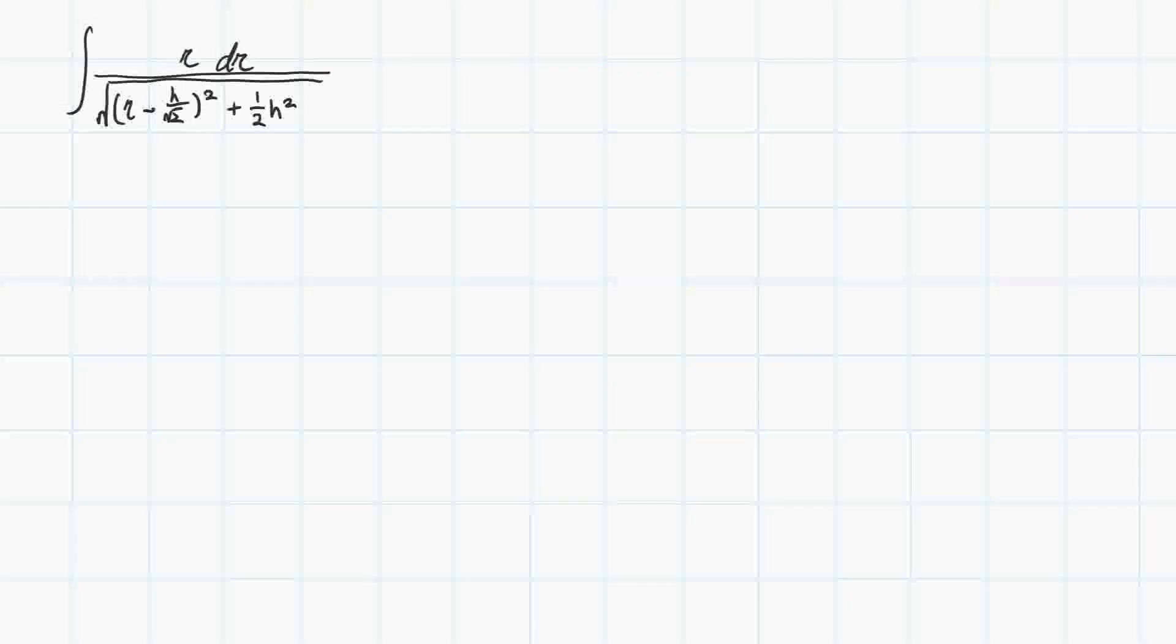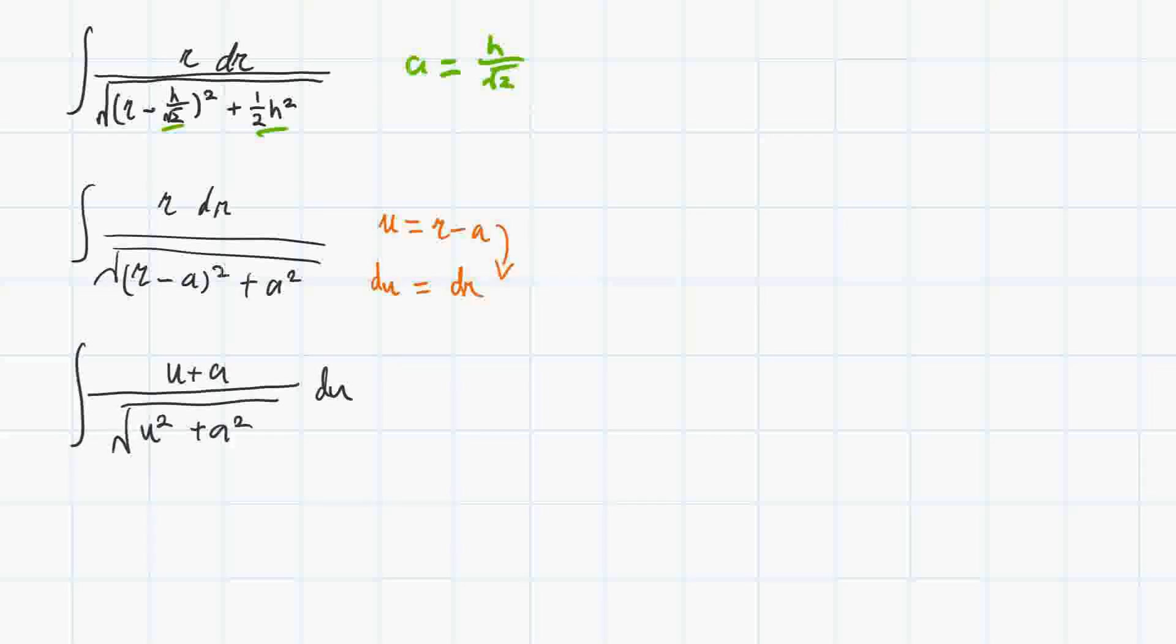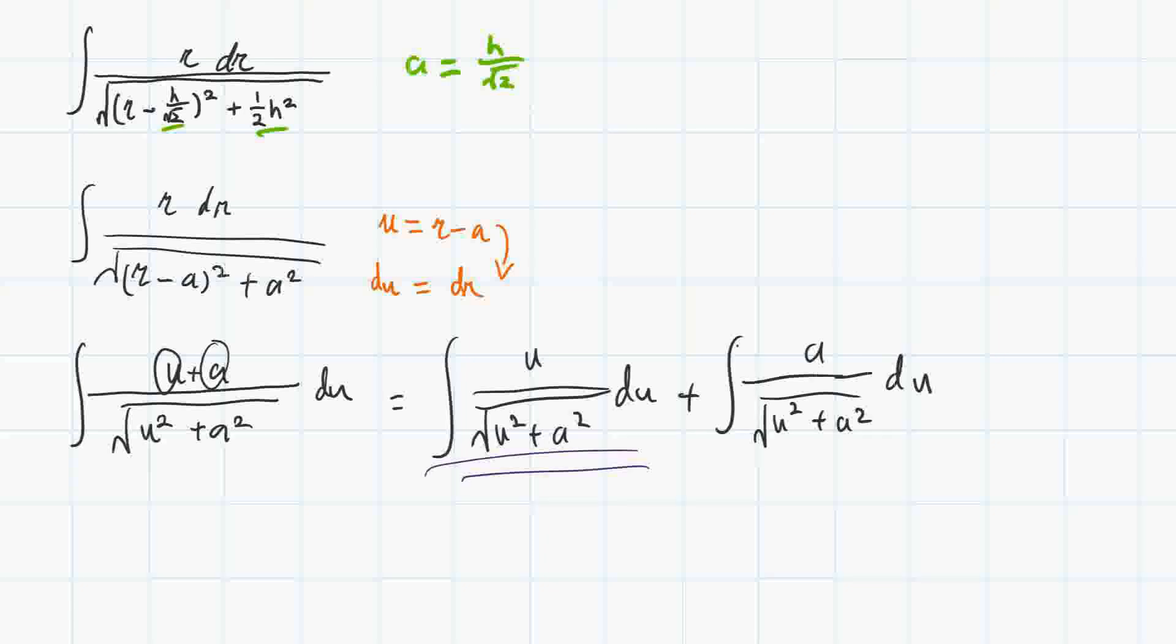I'm going to make a few substitutions. First, I'm going to substitute a equals h over square root of 2. We can do a u substitution, so I'm going to set u equals r minus a. And that will make it into a much more manageable form. du will equal dr. When you differentiate that, you just get dr. Now we essentially have two integrals, one with this term and one with this term. Let's tackle this one first.